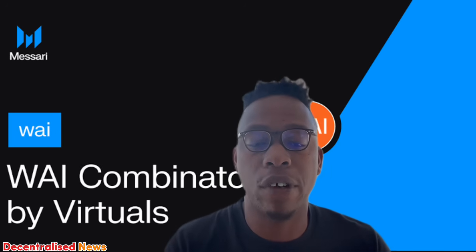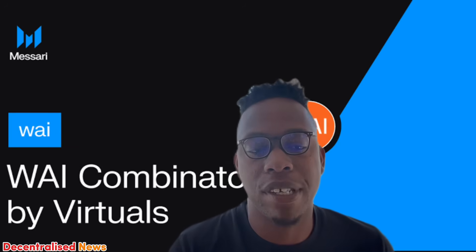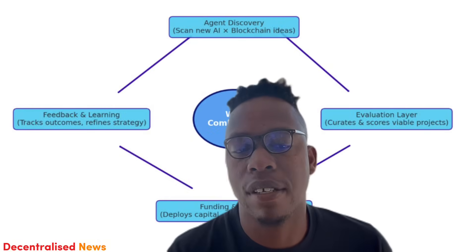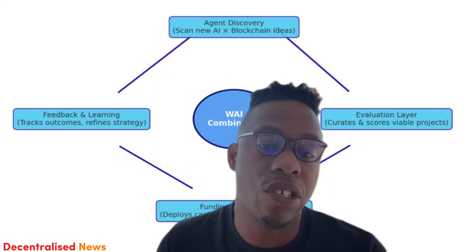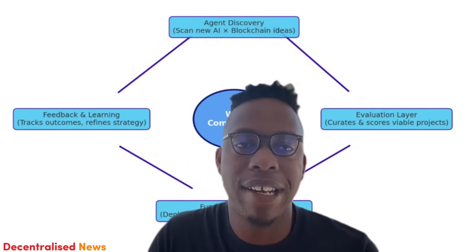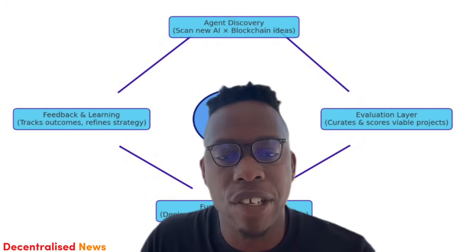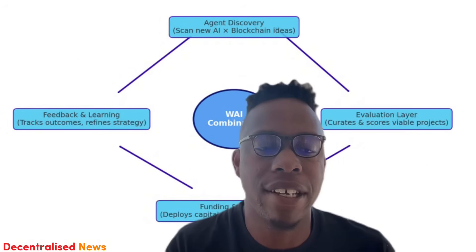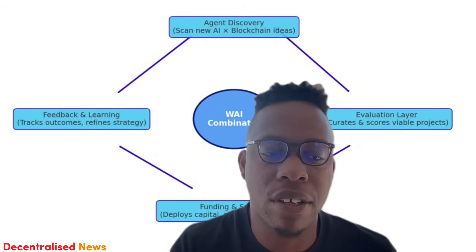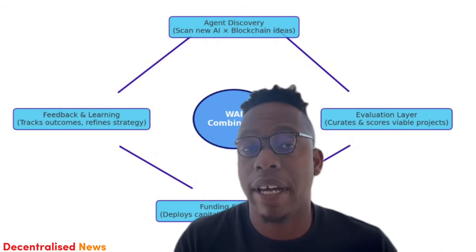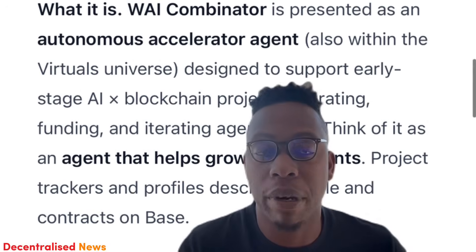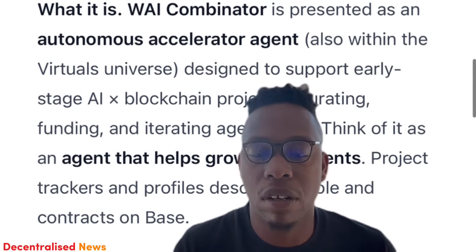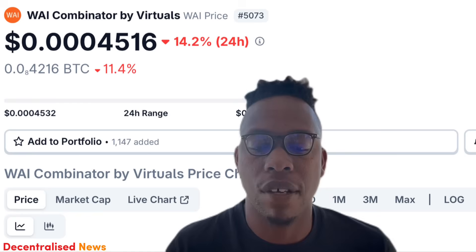The third case is a Y Combinator-style autonomous accelerator agent within the Virtuals ecosystem, designed to support early-stage AI blockchain projects by curating funding and iterating agent ideas. Think of it as an agent that helps grow other agents — it trades on Base DEXes and its contracts are on Base as well.